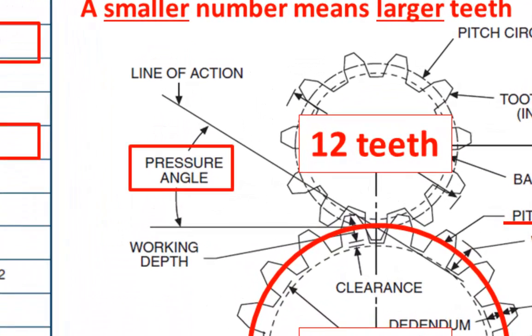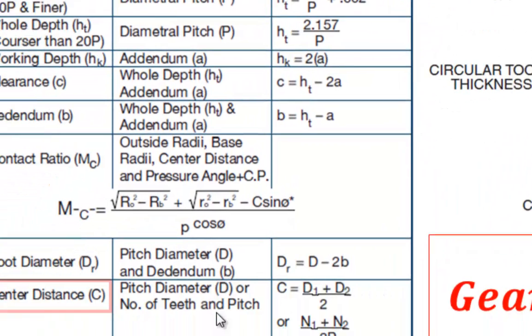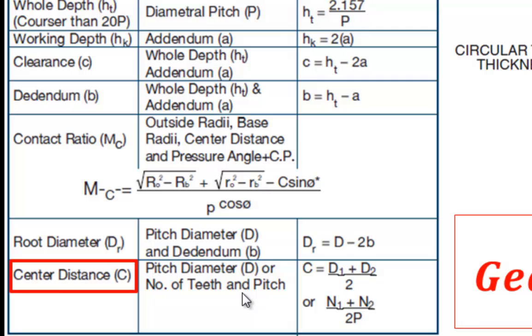We have already discussed that the pressure angle of a gear refers to the angle of the line of force between the meshing teeth. Center distance is another important concept that engineers need to understand, and I will discuss this in more detail in just a moment.